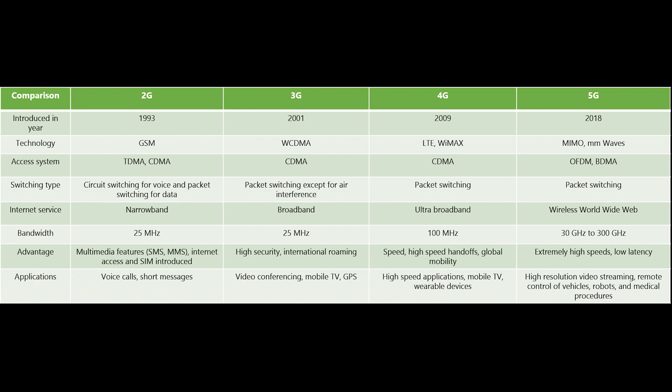2G refers to the second generation of mobile networks based on GSM, and its capabilities were achieved by allowing multiple users on a single channel via multiplexing. During 2G, cellular phones were used for data along with voice.